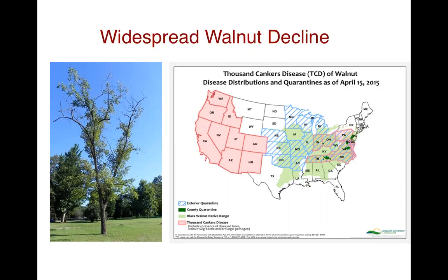The original range of walnut twig beetle closely coincides with its original host, which is Arizona walnut, down in the southwest. In recent years, the walnut twig beetle has expanded its range to areas in red in the west and also in the east. From museum records, it appears that the beetle has been present in California on susceptible walnut species for some time, with estimates ranging around 25 years.